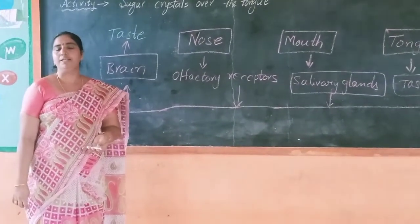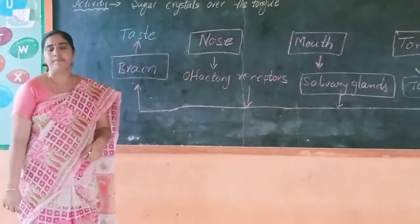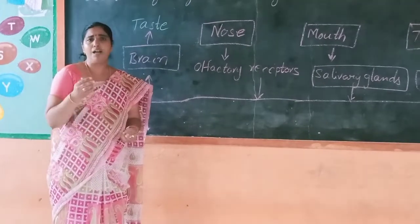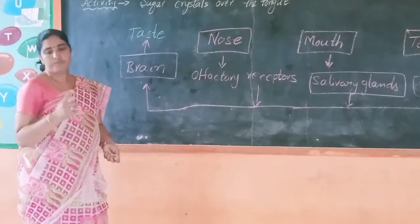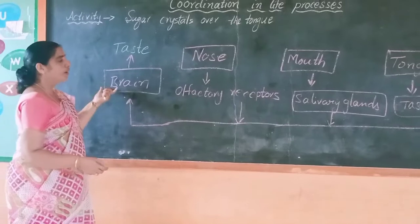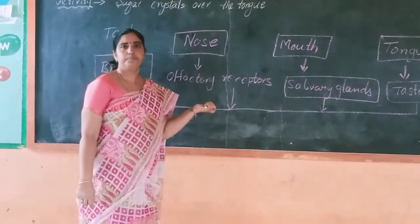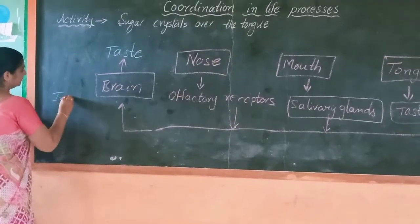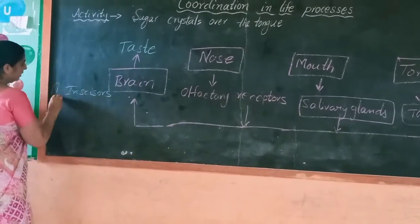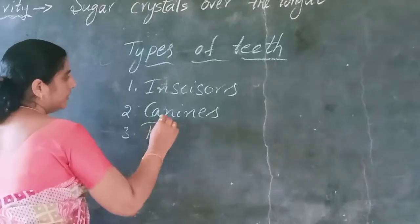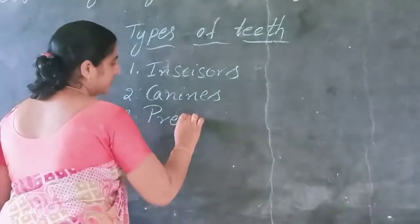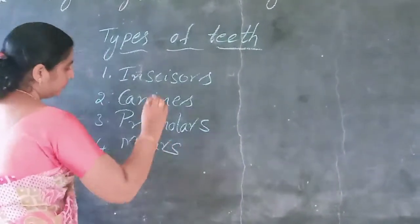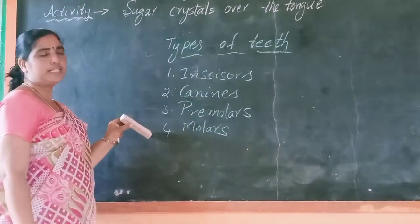We can also identify how the mouth acts as a munching machine, with different types of teeth working together. Our mouth contains different types of teeth. The first type is incisors — like scissors. The second type is canines. The third type is premolars. The fourth type is molars. These are the different types of teeth present in your mouth.